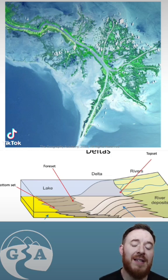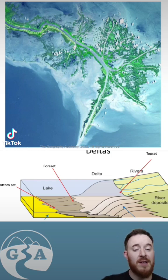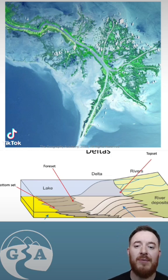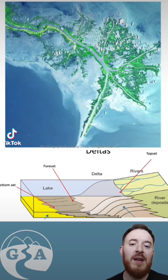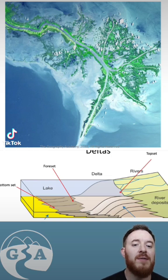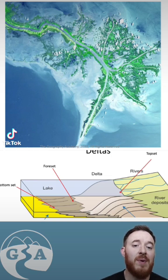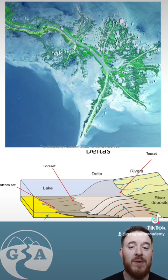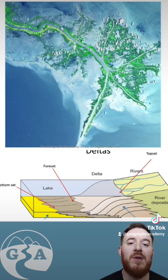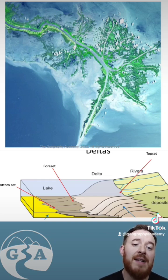It deposits the smallest sediment the furthest because it can actually carry it the furthest out there in what we call the bottom set. The foreset of the delta is then created with larger sediment, and then finally we have the topset which begins to appear above the surface of the water.